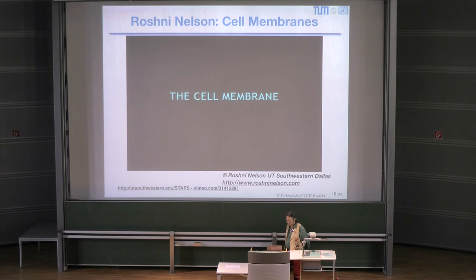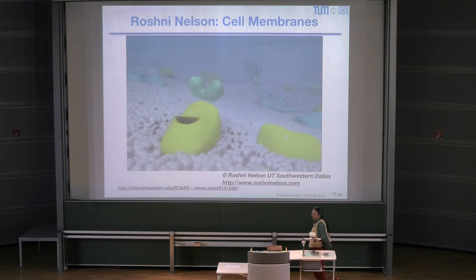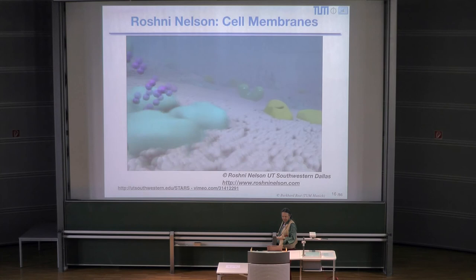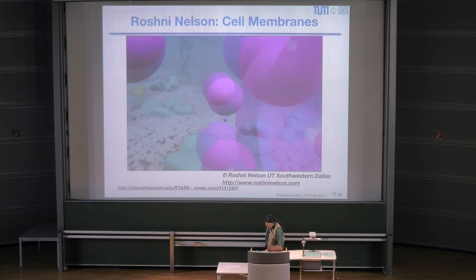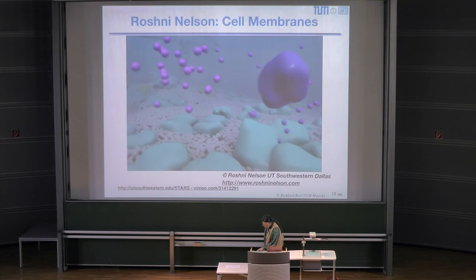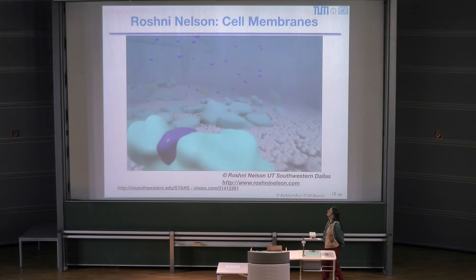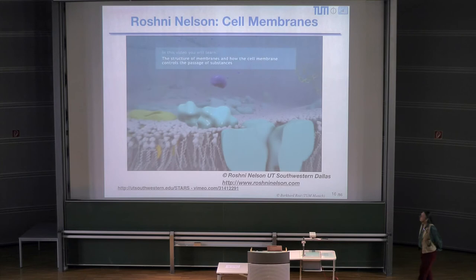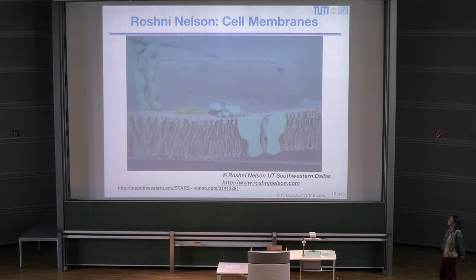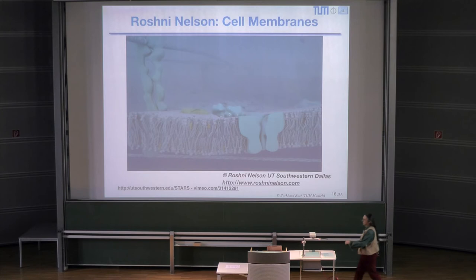Here are some short movies from Roshni Nelson, originally at Southwestern. The cell membrane controls traffic into and out of the cell. Like all biological membranes, the cell membrane exhibits selective permeability — it allows some substances to pass more easily than others. This ability of the cell to discriminate in its chemical exchanges with its environment is fundamental to life, and it is the cell membrane that makes this selectivity possible.